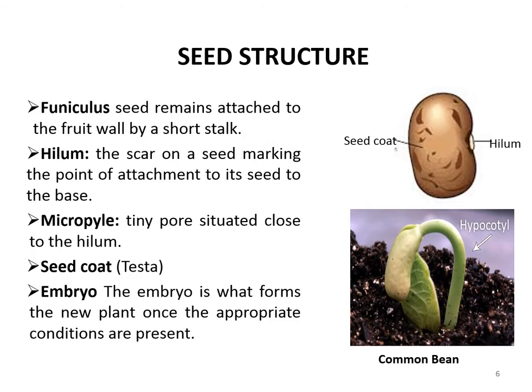Let's discuss the seed structure. The first structure is the spinaculis. A typical dicot seed remains attached to the fruit wall by a short stalk known as the spinaculis. Next is the hilum — the scar on a seed marking the point of attachment of the seed to the base. The micropyle is a tiny pore situated close to the hilum. It helps in absorbing water to facilitate germination and allows the diffusion of respiratory gases.